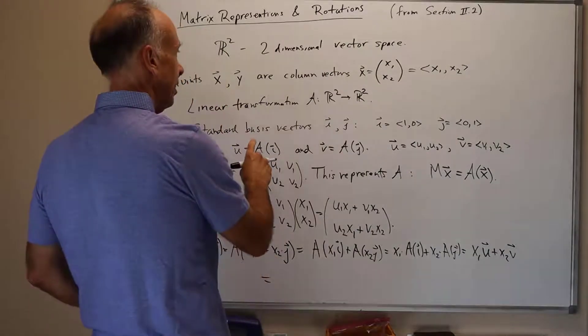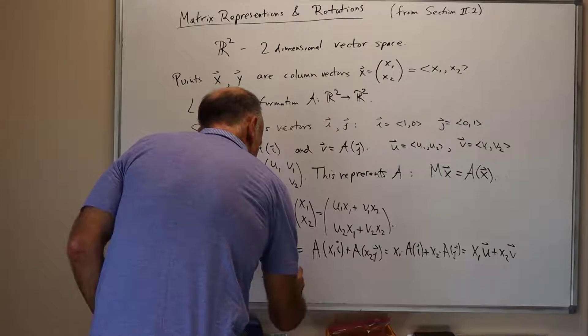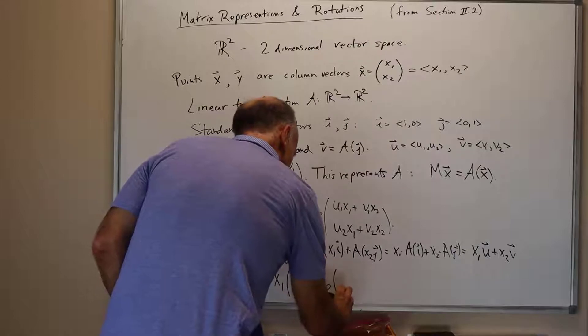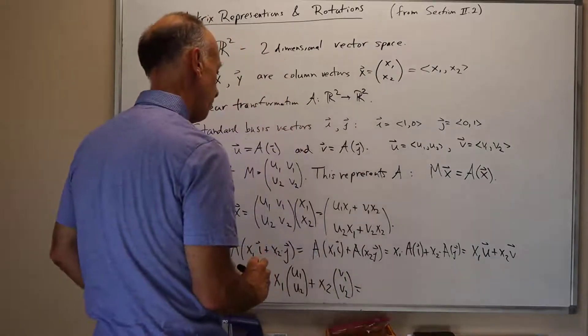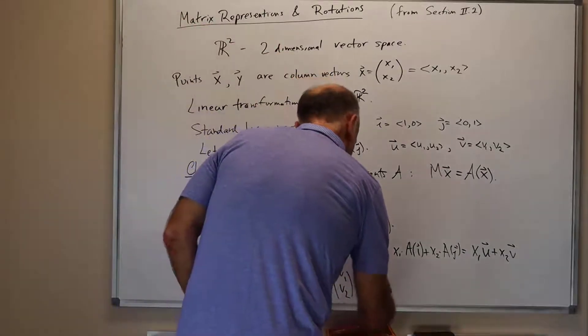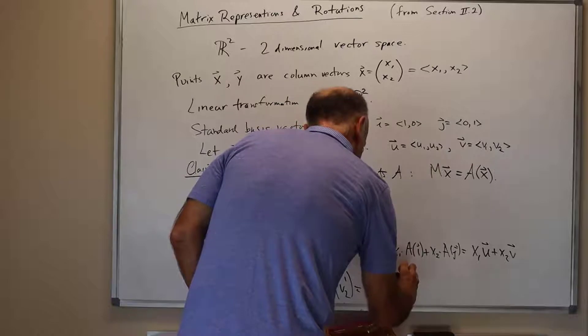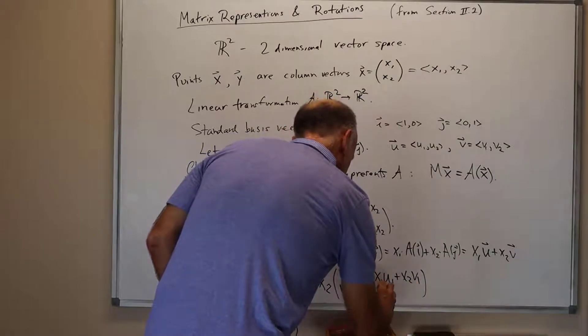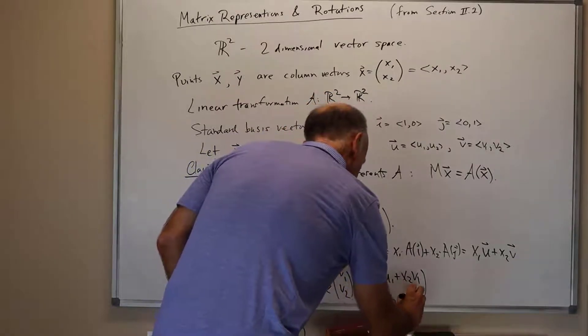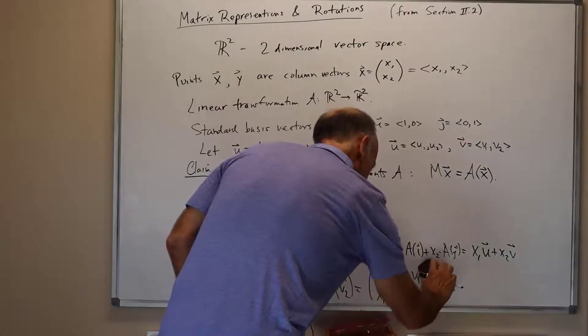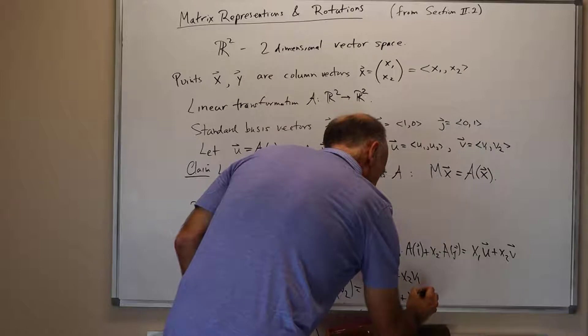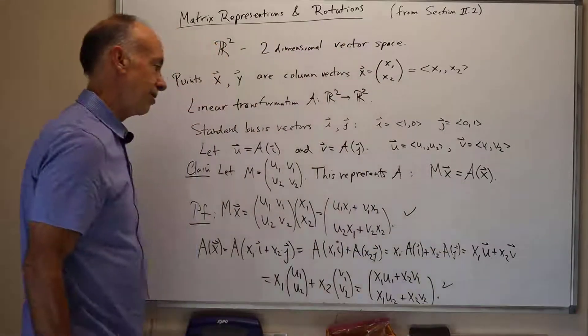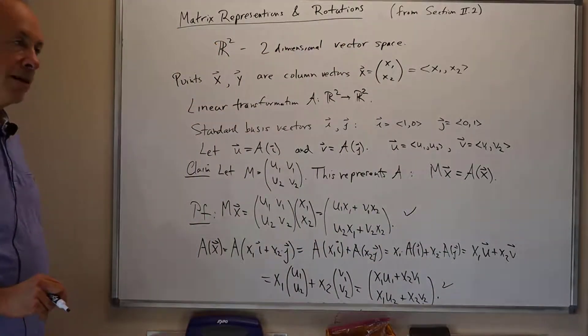Now u and v are the column vectors u1, u2, so that's equal to x1 times the column vector u1, u2 plus x2 times the column vector v1, v2. Then we just group things together. That's the same as x1 u1 plus x2 v1 is the first entry, and the second entry is x1 u2 plus x2 v2. We can see that this is equal to this, apart from the order of the products. And so this proves the claim.